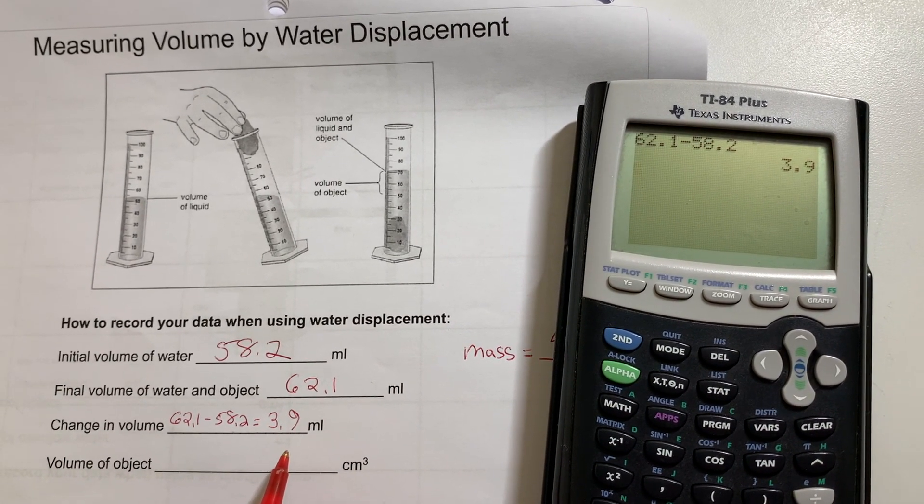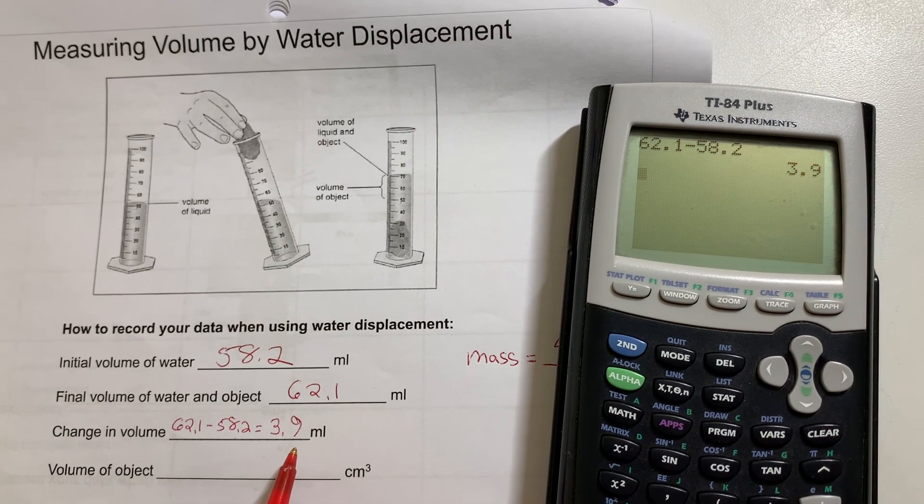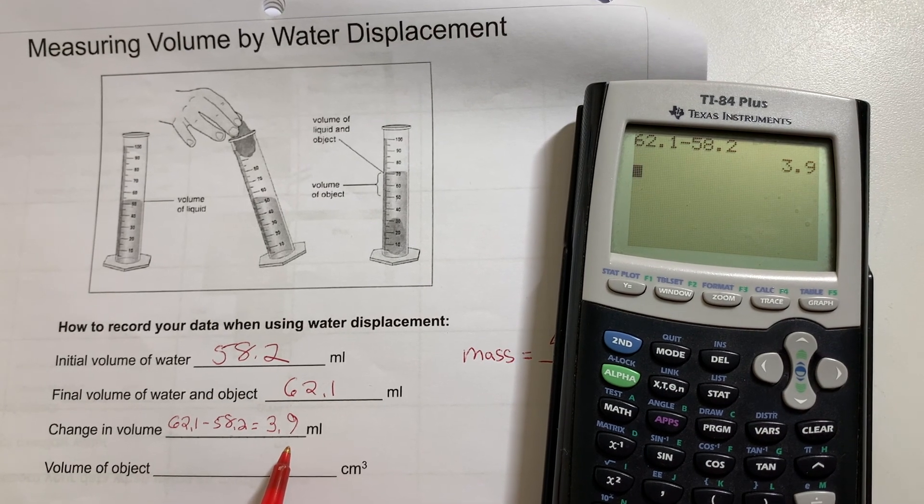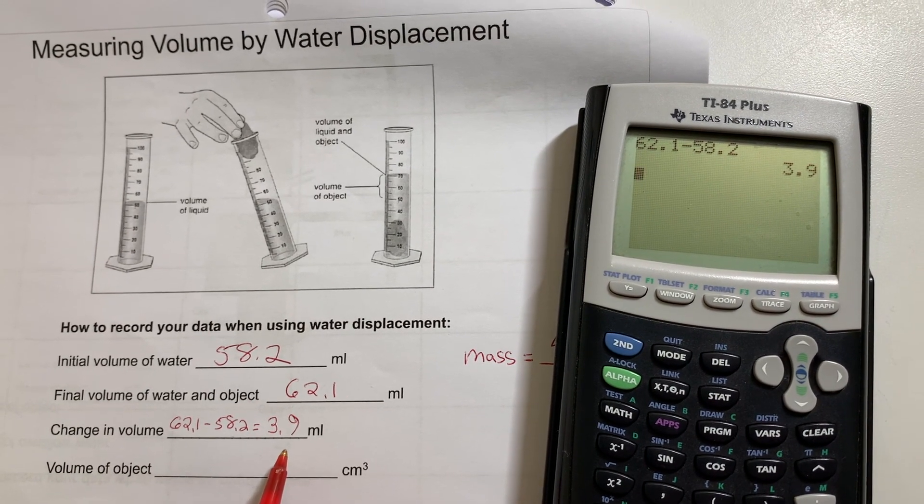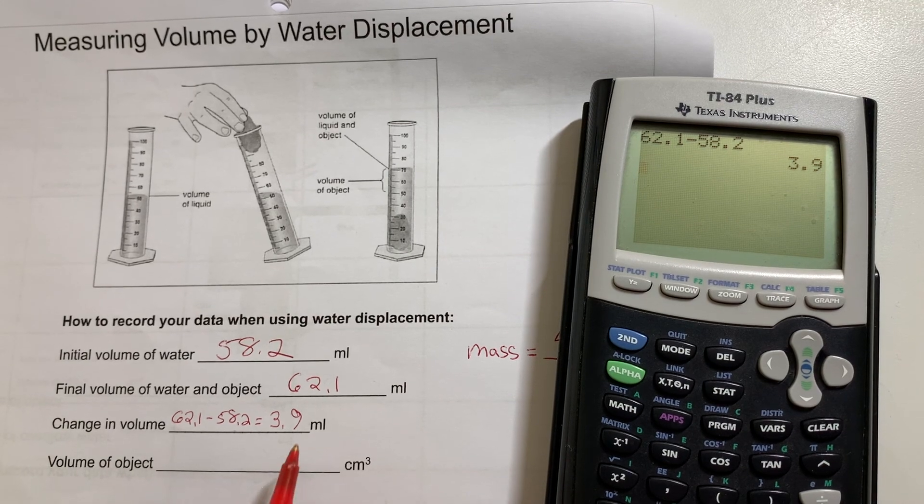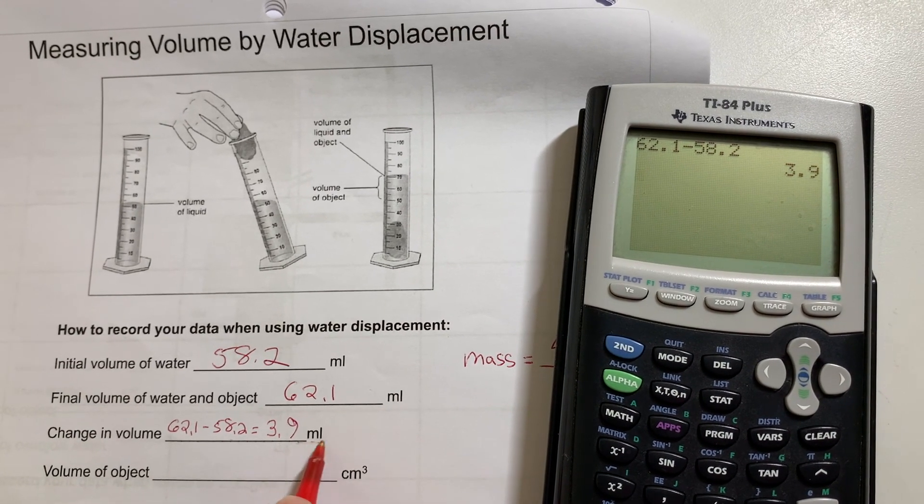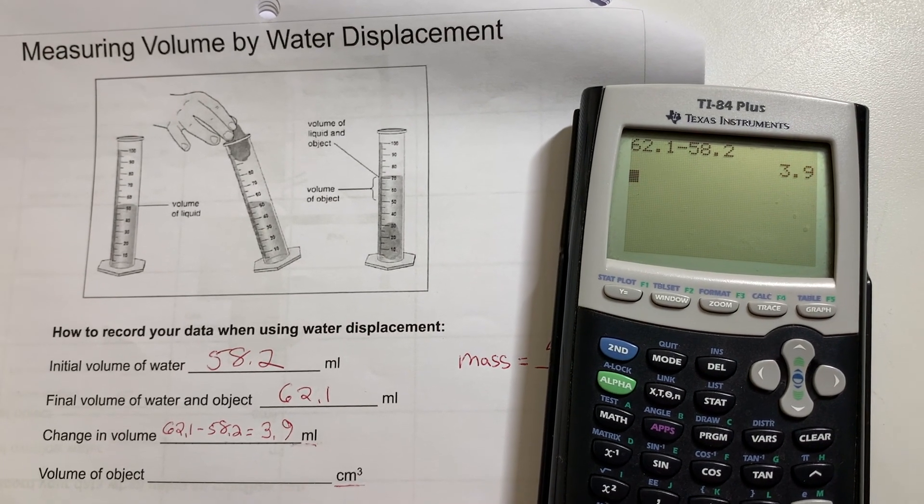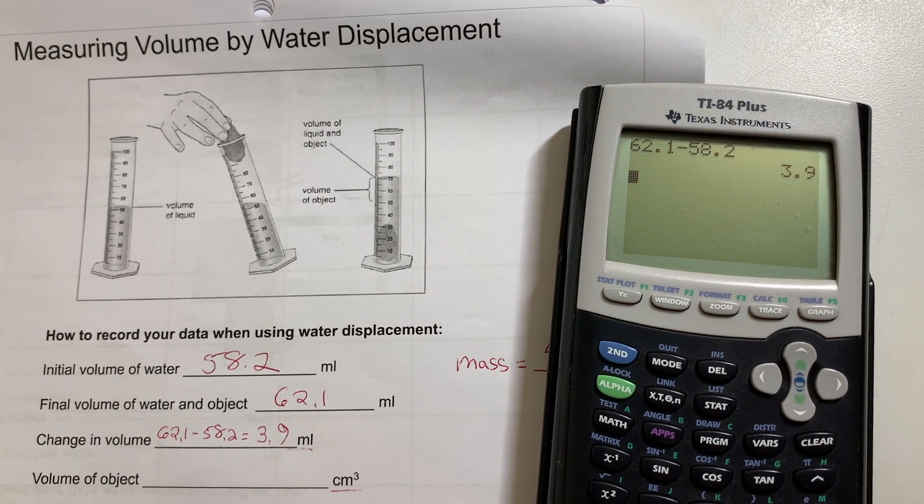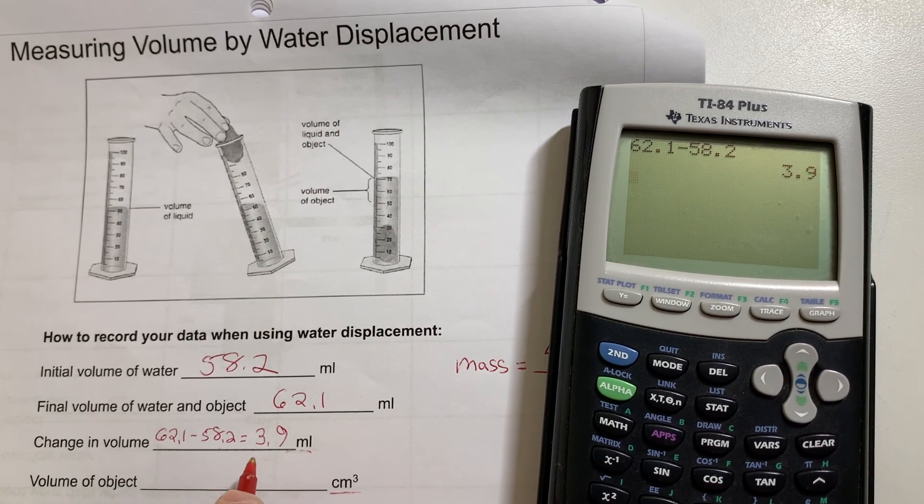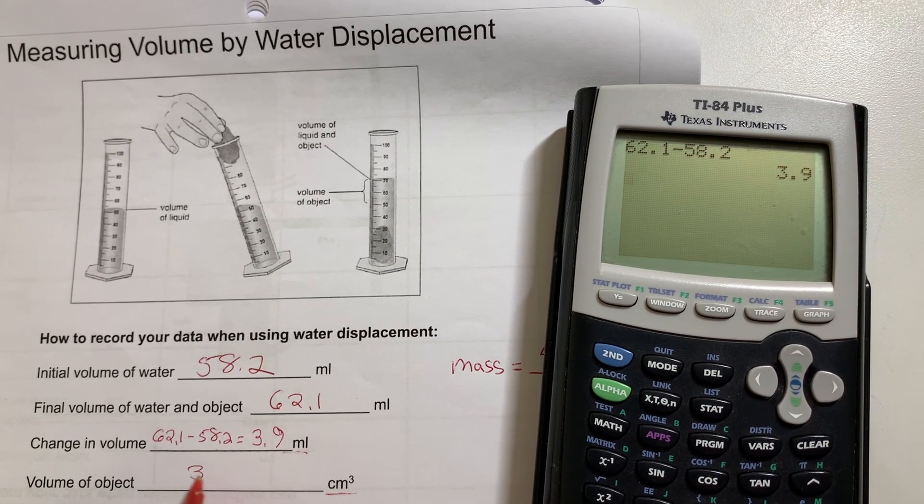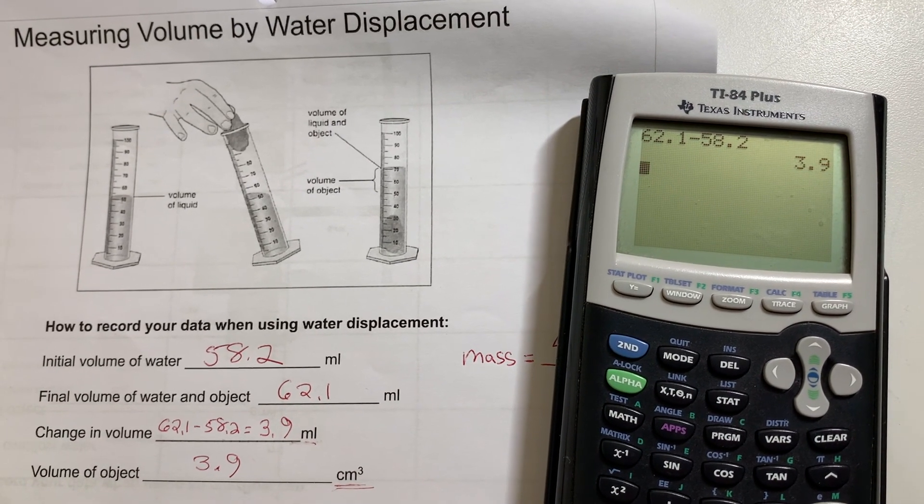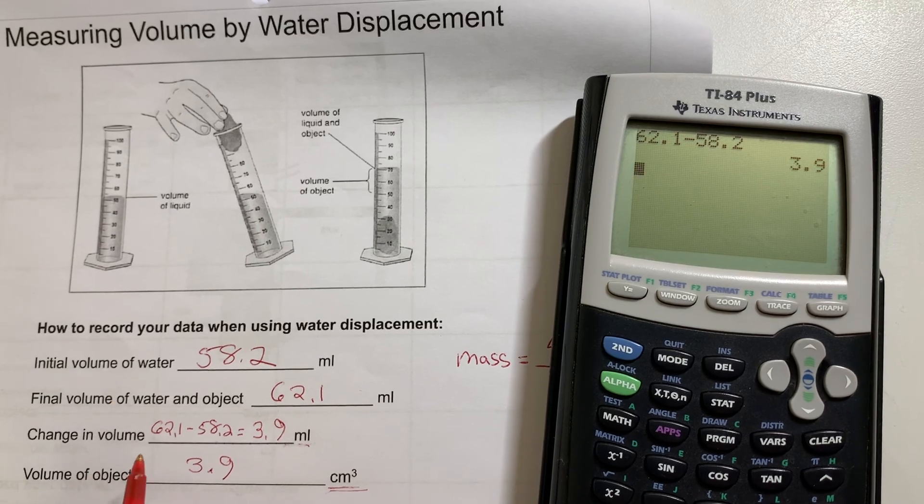Now that of course represents the change of volume of the water. In other words, the amount of water that was displaced by the cat. However, we're interested in knowing the volume of the cat. And being a solid, we'd like to convert that volume measurement of milliliters into a solid measurement of cubic centimeters. Thankfully, by the special relationship, it's a one-to-one. So we have simply 3.9 cubic centimeters for the volume of the cat. And now I'll transfer this onto our real data sheet.